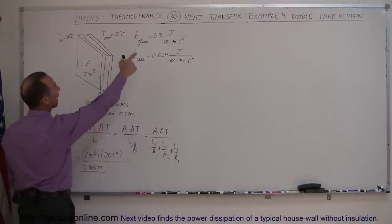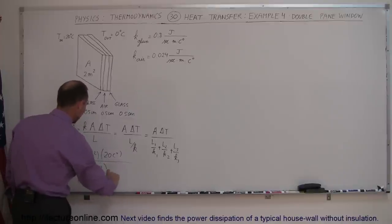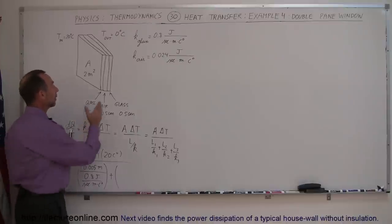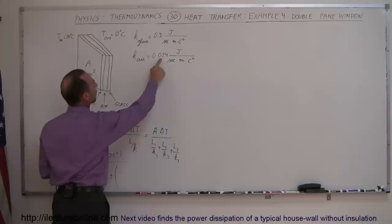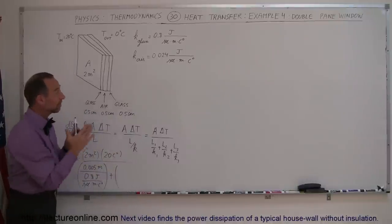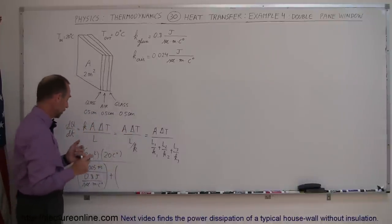Divided by the k1. Since the first layer is glass, we use 0.8, so it's 0.8 joules per second times meter times centigrade degree. Now the next layer is air, and this is the beauty of a double pane window. The air is trapped between the two layers of glass, and notice the heat conductivity for air is much smaller than the heat conductivity for glass.